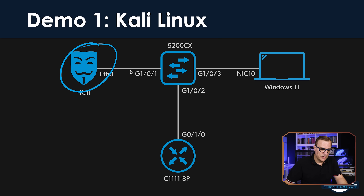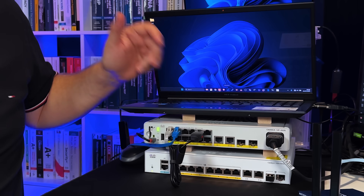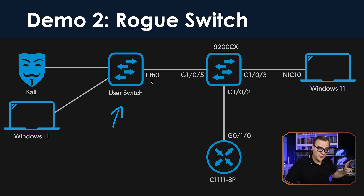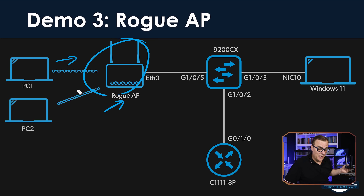Port security will stop different scenarios. For example, you'll stop rogue devices from simply being connected into your network — like the Shark Jack example. You could also have Kali Linux running on a computer connected to the network. The idea is to stop people from connecting hacking devices directly to your network. You can also stop users from connecting unauthorized switches — like a Netgear switch — to your network. And as mentioned, you want to stop rogue access points from being connected, which would allow people from outside your organization access to your network.